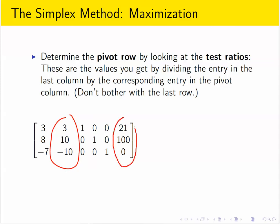We take an entry there, and divide it by the corresponding entry in the pivot column. So for example, we'll take this 21, and we'll divide it by this 3. That gives us a test ratio of 7 for the first row.